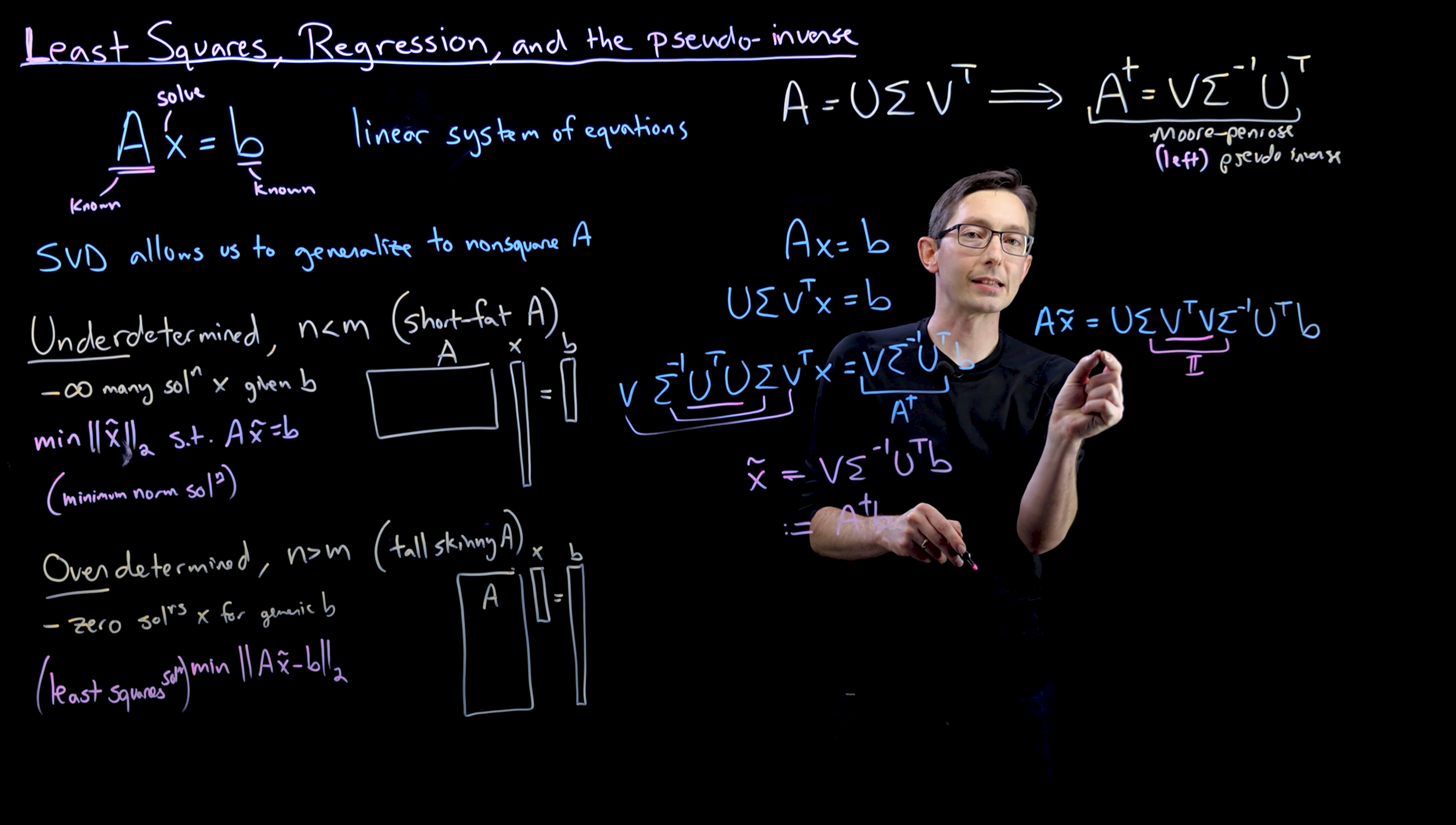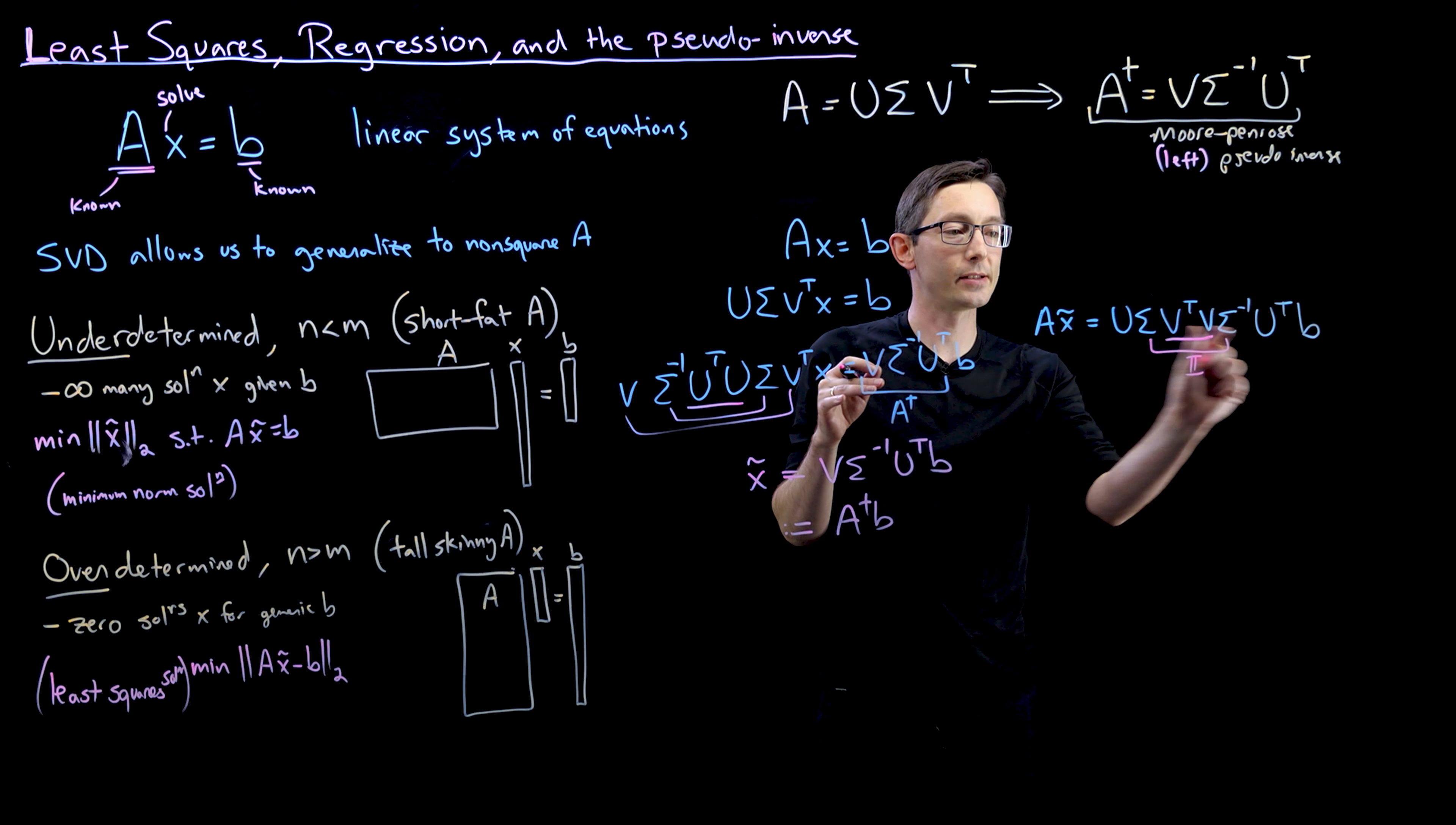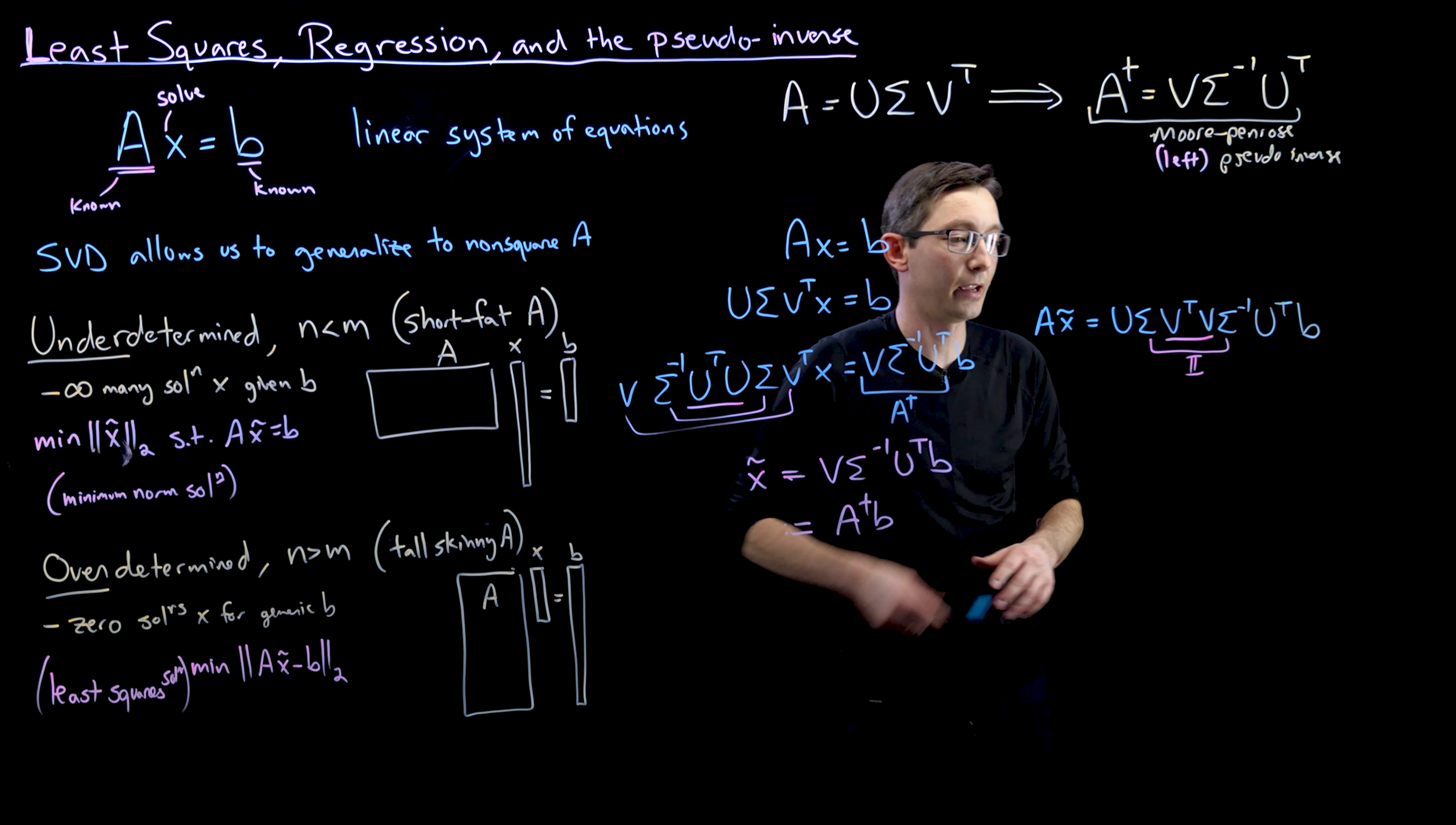But here's where we get stuck. U times U transpose, at least if we're using the economy SVD, where these are just the first few M columns, or a truncated SVD, where these are the first few columns of U. Then in that case, U U transpose is not the identity matrix. And it might not even be that close to the identity matrix.